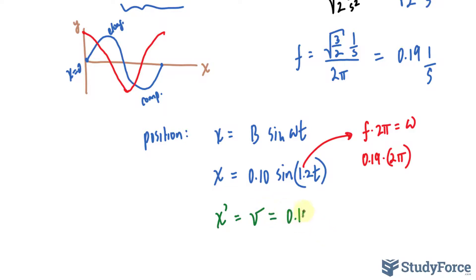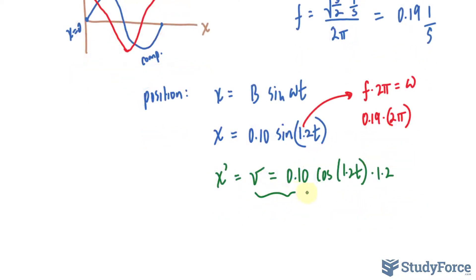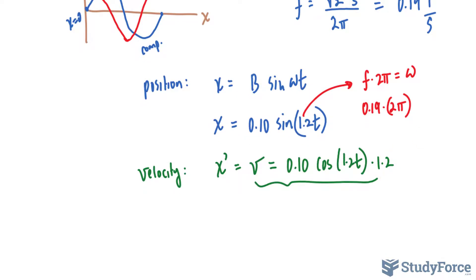Taking the derivative, which I'll write down x prime, gives us the velocity function. So v equals 0.10, the derivative of sine is cosine, 1.2 t, and then we take the derivative of what's inside cosine, which is 1.2. This is the function for velocity. You can also multiply 0.10 by 1.2 if you like, but I'm just going to leave it factored out.